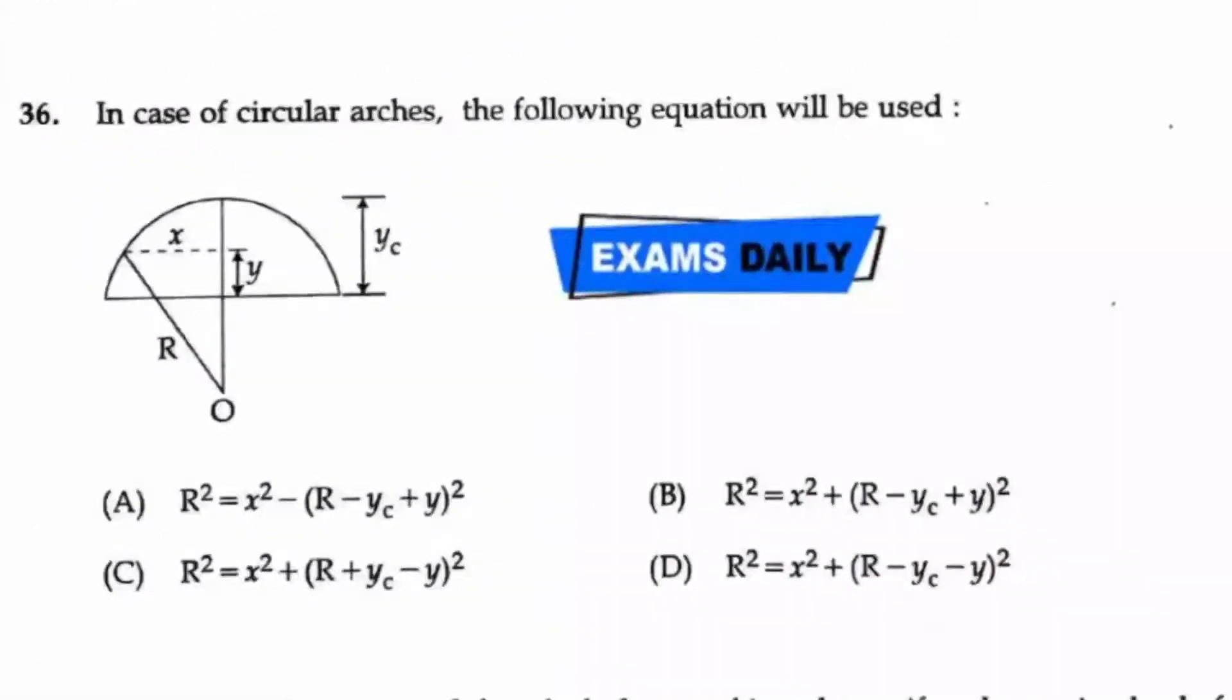Question number 36: In case of circular arches, the following equation will be used. They have given a semicircular arch here with various measurements. If you see, a triangle is visible there.